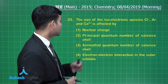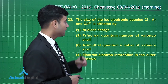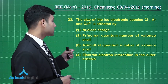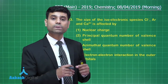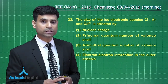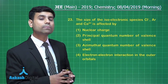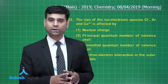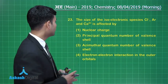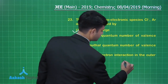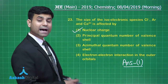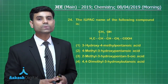Since isoelectronic species have the same number of electrons, they have the same principal quantum number of the valence shell, the same azimuthal quantum number, and the same electron-electron interaction. However, the nuclear charges are different. Therefore, the major factor determining size in isoelectronic species is nuclear charge. The correct answer is option 1.